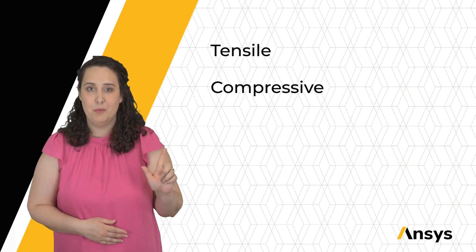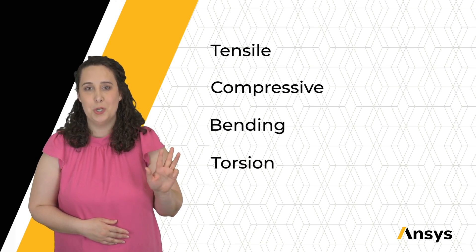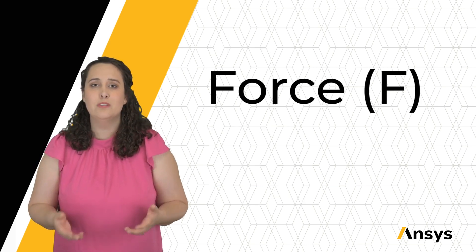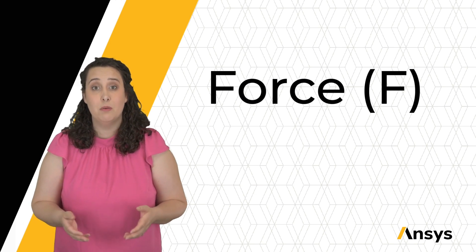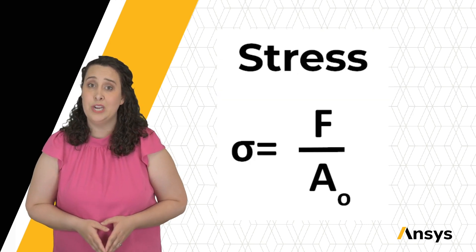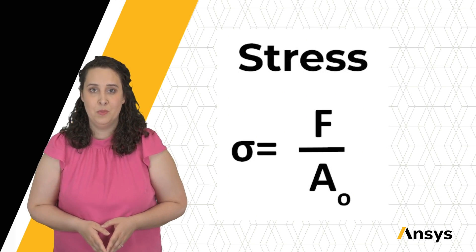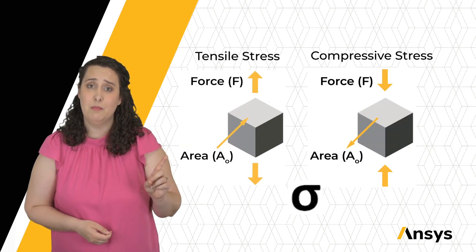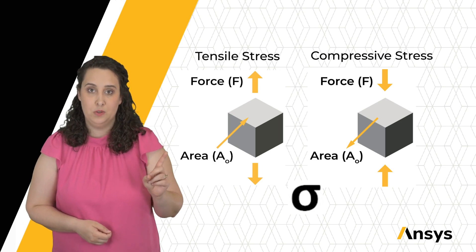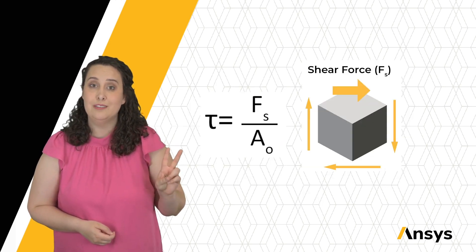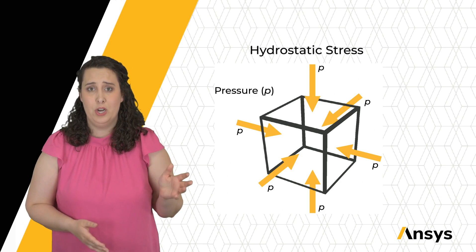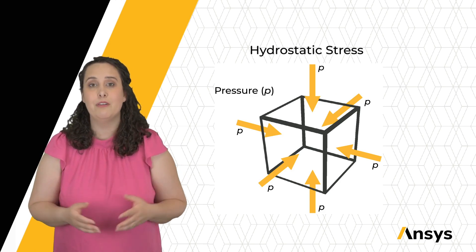We then defined five modes of loading: tensile, compressive, bending, torsion, and internal pressure. We saw that when I'm applying some force F to my material, I'm applying it over some initial area A0. F over A0 is defined as engineering stress. We learned about three different stress cases. We have tensile or compressive stress, notated by sigma, where my force is perpendicular to my initial area. We have shear stress, tau, where my force is parallel to my initial area. We have hydrostatic stress, or pressure, where I'm applying a force over the entire area of my material.